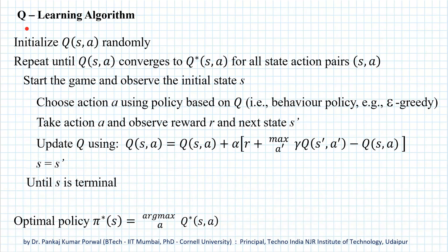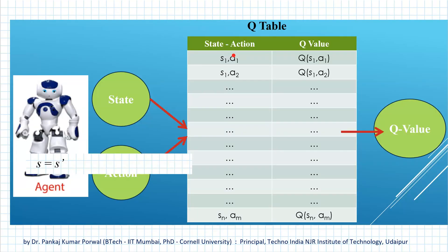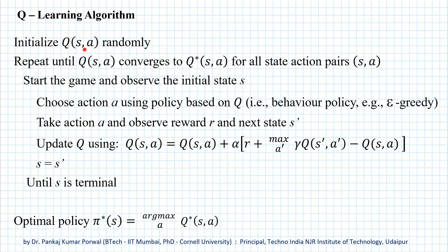Now let us move to the Q-learning algorithm. The first step is to initialize the Q-table randomly — that is, we assign random Q-values to all the state-action pairs. Once we have initialized our Q-table, we start playing the game repeatedly until our Q-values converge to optimal Q-values for all state-action pairs. We start the game and observe the initial state S. Once the agent is in state S, it knows all the actions available in that state, but it does not know the rewards and resulting states associated with each of those actions — it will know that only after taking a particular action.